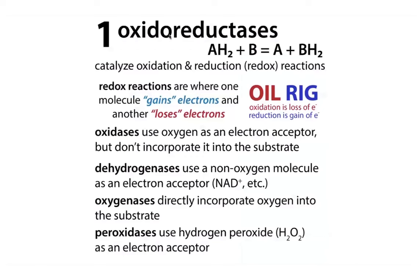An oxidoreductase catalyzes an oxidation or reduction reaction. Remember OIL RIG: oxidation is loss of electrons or electron density, and reduction is gain of electrons or electron density. Common names include oxidases, dehydrogenases, oxygenases, and peroxidases. The most important thing is being able to recognize when oxidation and reduction are occurring.